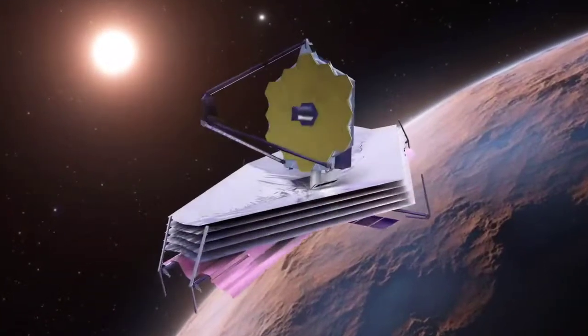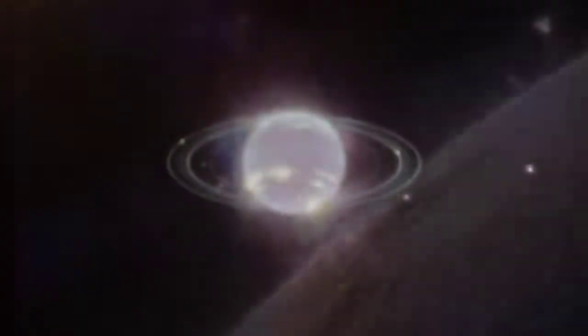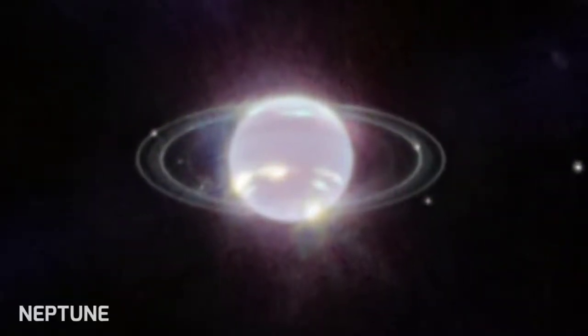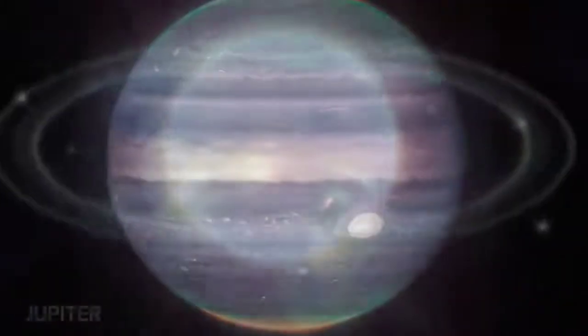Along with all these discoveries, the Webb Telescope showed the two planets of our solar system, Neptune and Jupiter, with infrared vision.